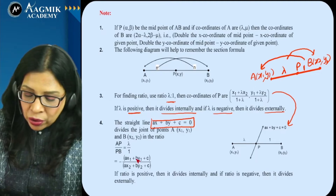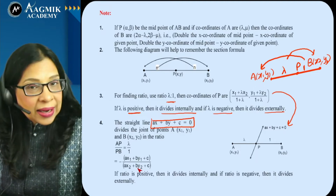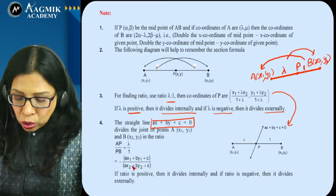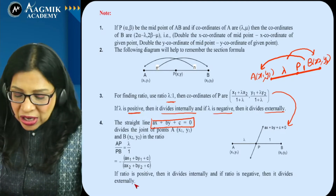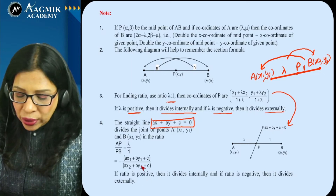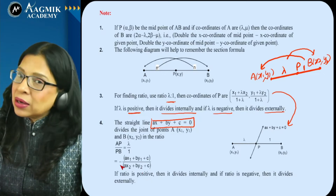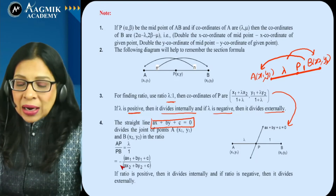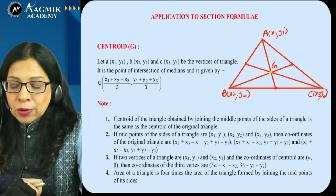The ratio is positive when the two expressions have opposite signs (because of the leading minus sign). If both expressions have the same sign, the ratio is negative. This was our section formula with related key points.